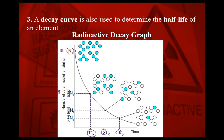One other thing to note is the slope of the decay curve, which shows you the activity — how many decays are occurring per second. Initially the slope is very steep, meaning lots of decays per second. As time passes, the slope gets progressively flatter, meaning fewer decays are occurring.